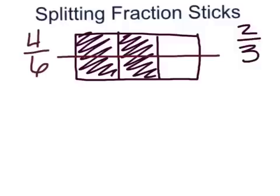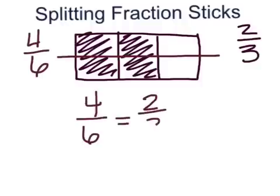Here's the question you need to think about: has the shaded amount of the rectangle changed? It hasn't. Because exactly the same amount of the rectangle is shaded, the fraction two-thirds and four-sixths are equivalent. So four-sixths equals two-thirds.